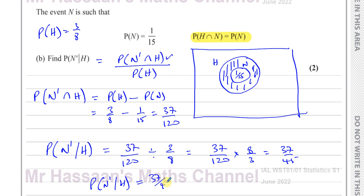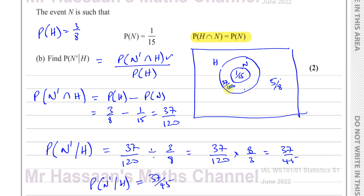So we found the area between H and N — the probability of something landing in that donut region is 37 over 120. The probability outside all of this is 5 eighths. The probability of all of H is 3 eighths, N is 1 over 15, and the donut region is 37 over 120. We don't have to show this diagram but it helps us picture what's happening. It's always a good idea to draw a Venn diagram for these types of questions.